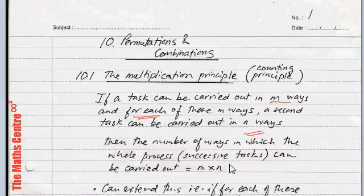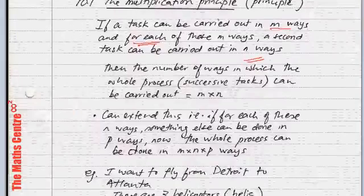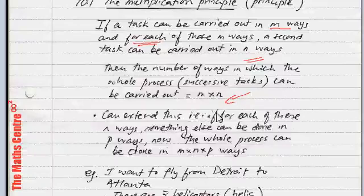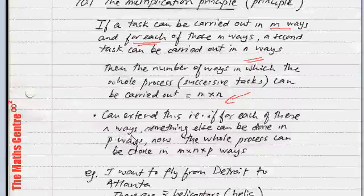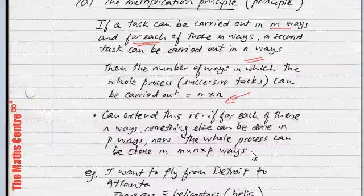So, if something can be done in M ways, for each of these M ways, something else can be done in N ways, then the total number of ways the whole thing can be accomplished will be equal to M times N. You can extend this. If for each of these N ways, that is the second task just now, something else can be done in P ways, then the whole process can now be done in M times N times P ways.